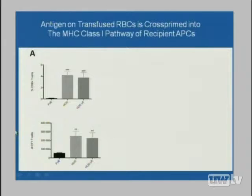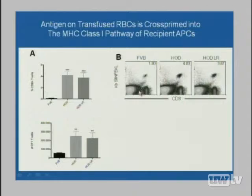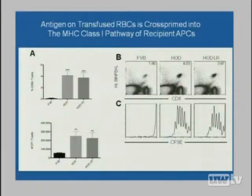The upshot is: if you see activation of these T cells, it demonstrates cross-presentation of the red cell antigen into the class I pathway of the recipient and activation of the recipient's CD8 T cells. And that's precisely what we saw. If you look at the number of OT-1 T cells in a recipient mouse that got just the FVB blood — the control blood — this is the baseline. When you give the HOD blood, leukoreduced or not, you get significant expansion of the CD8 T cells.